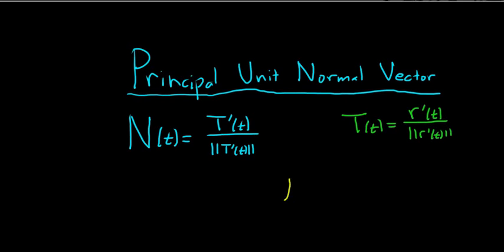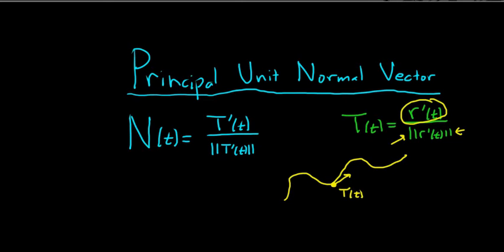Let's say we have a curve. In this case, the yellow vector is T(t) — your tangent vector, hence the name tangent. It's tangent to the curve and it's a unit vector, because we've divided by the magnitude of r′. We've essentially turned r′(t) into a unit vector. Recall that r′(t) is your velocity vector, so when we divide by its magnitude we normalize it — meaning the magnitude of this vector is 1.